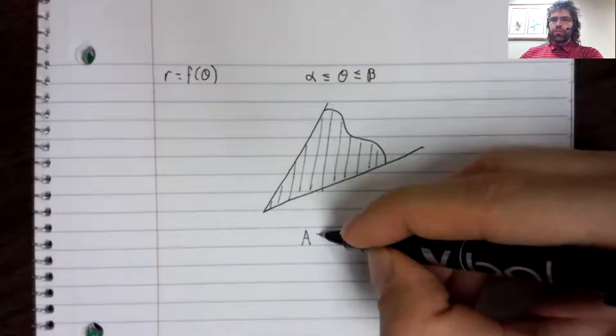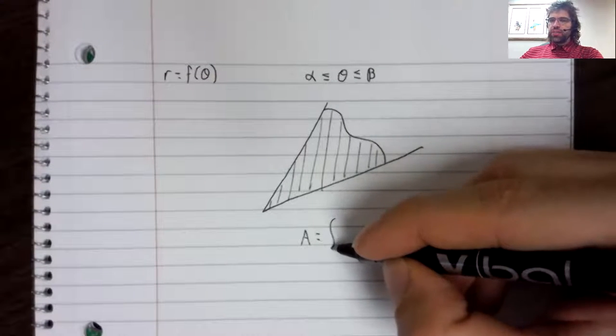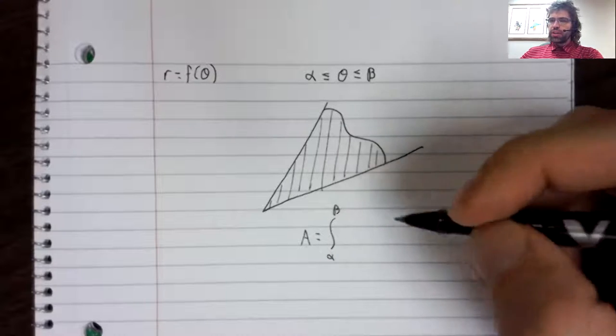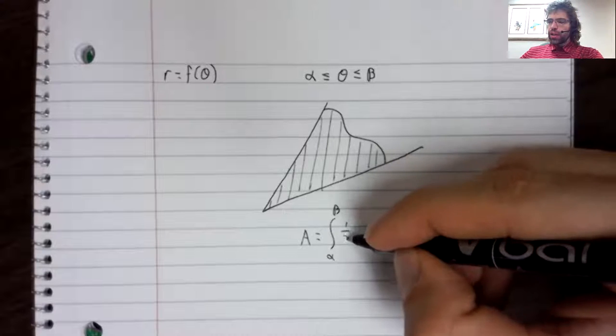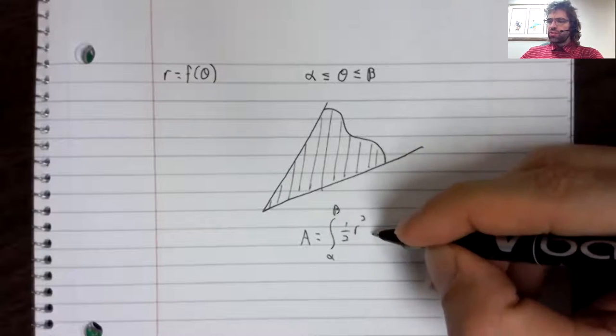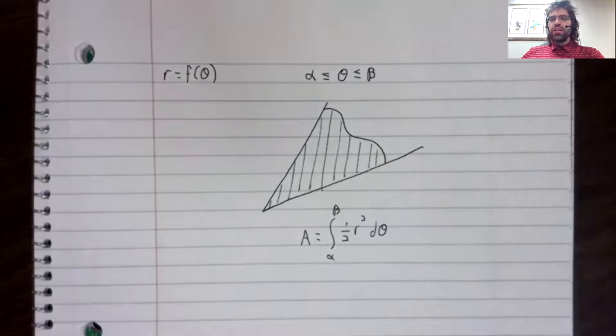Our formula is that A is the integral from alpha to beta of one half the radius squared d theta.